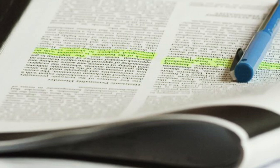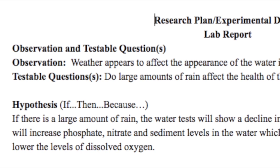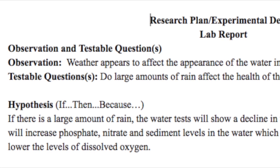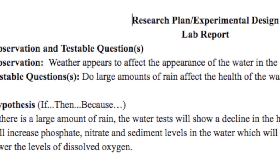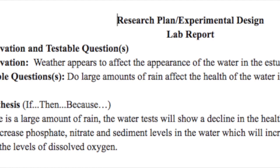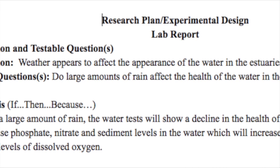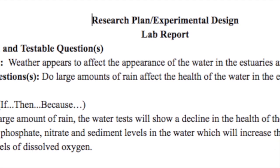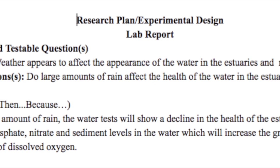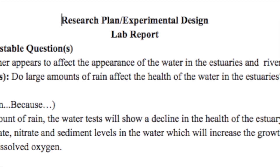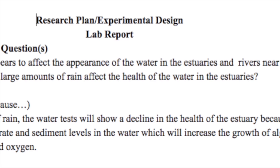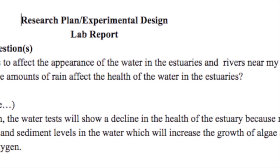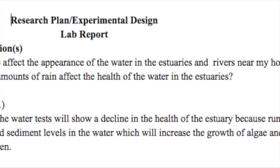Before experimentation can begin, the experiment must be planned. The research plan is a step-by-step guide that will allow students to repeat the same procedures for each trial of the experiment conducted. The more trials conducted, the more accurate the results will be. Remember, with all scientific writing, do not use personal pronouns. There is a research plan template in the folder that students may make a copy of and use for planning their experiment, and there is one that has been completed as an example. Let's take a closer look.